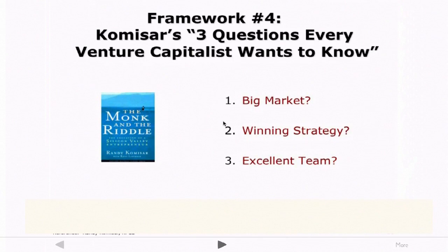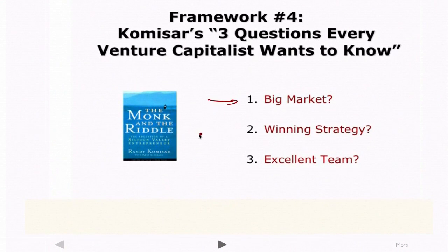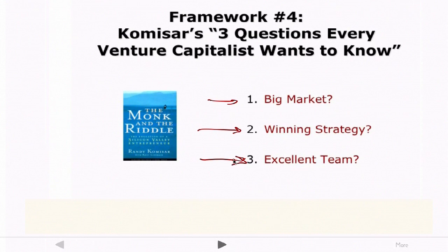Key framework number four comes from Randy Komisar's book, The Monk and the Riddle. He talks about three questions that every venture capitalist wants answered: Is it a big market? Do we have a winning strategy — and if so, what is it and why do we think it's winning? And is it an excellent team? If you can provide answers to these three questions, these are the fundamental building blocks of the venture. We'll be talking in much more detail about each of these throughout the course.